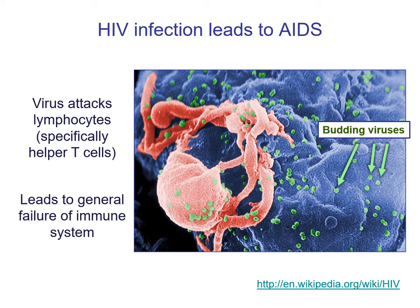HIV is the virus and it infects T lymphocytes, which are a special type of immune cell. If someone does not get treatment, it can eventually lead to immune system failure, which is called AIDS. But most people in Canada do get treatment and have access to treatment, so even if they are HIV positive they don't necessarily get AIDS.